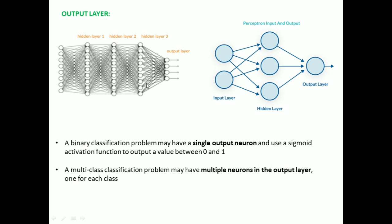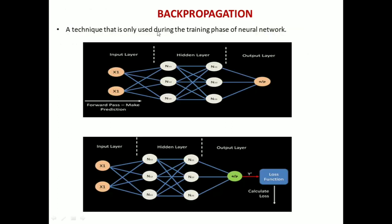This concept is called back propagation. Back propagation is a technique used only during the training phase of the neural network. During training, the network is initialized with random weight values. The training data is fed to the network and the network calculates the output — this process is called the forward pass. The calculated output is then compared with the actual output using a loss function or cost function, and the error is determined.